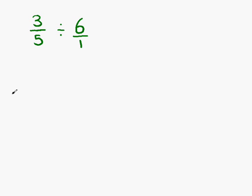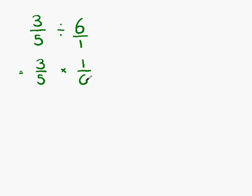Dividing fractions can't be done easily, so what we can do is change it to a multiplication. In order to get the same answer, what we do is turn the second fraction upside down. So three-fifths divided by six over one is the same as three-fifths multiplied by one over six. Both these give us the exact same answer, and multiplication is much easier to do.